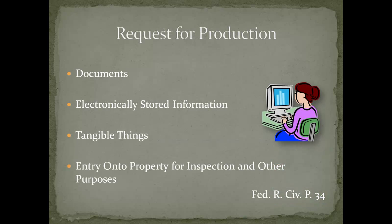Rule 34 of the Federal Rules of Civil Procedure covers a discovery tool commonly called a request for production. Under this rule, a party may request that another party produce documents, electronically stored information, tangible things, or allow entry onto property for inspection or other purposes.